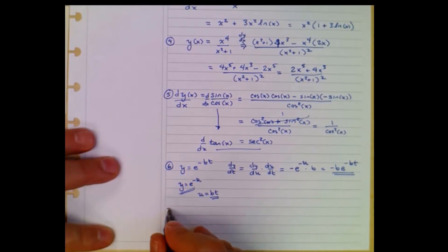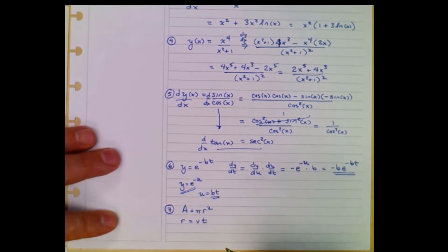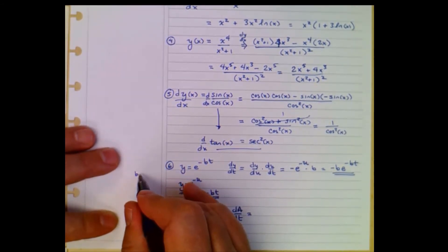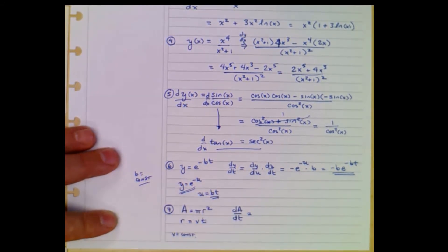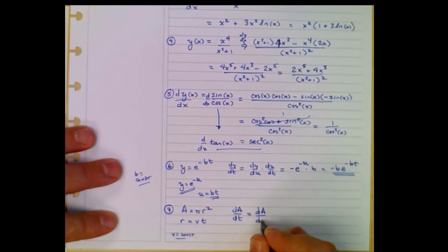One final one. We'll try to squeeze into the bottom here. Let's consider the area of a circle as the circle's radius changes. So we want to find what is the derivative of A with respect to t. Now, we could do this by simply substituting vt. So v is a constant here, just like b as a constant up here, which I forgot to mention. So we could do this by taking vt and plugging it in for r and then explicitly taking the derivative with respect to t. But I want to use the chain rule as we're practicing it.